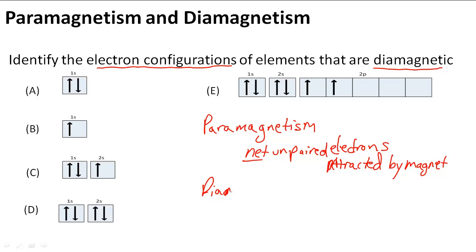Diamagnetism means the opposite. Diamagnetism means it does not have net unpaired electrons, and this means that it's not really attracted by magnets due to the fact that all of its electrons are paired.